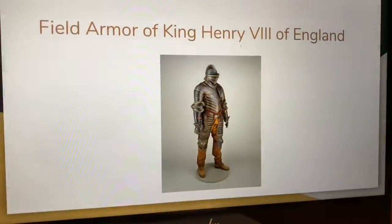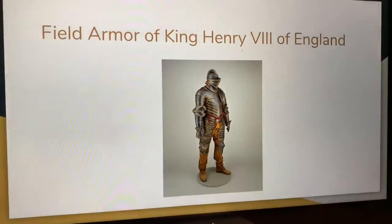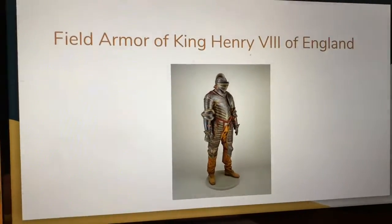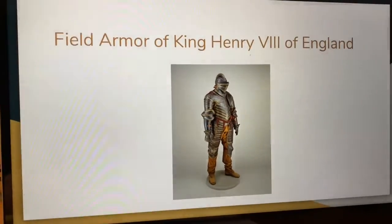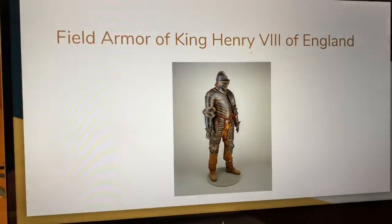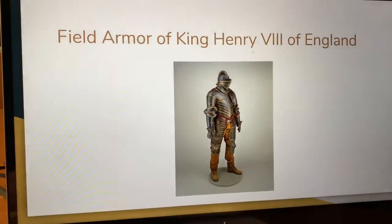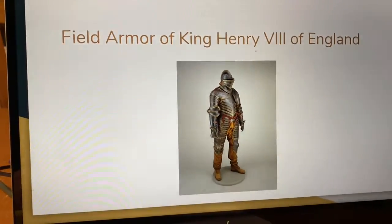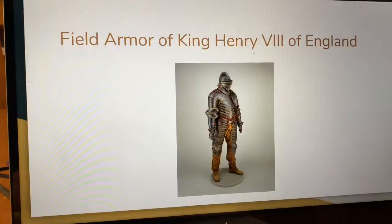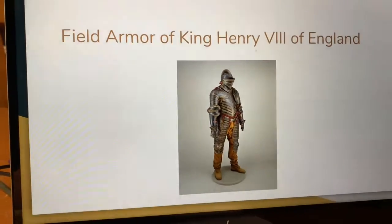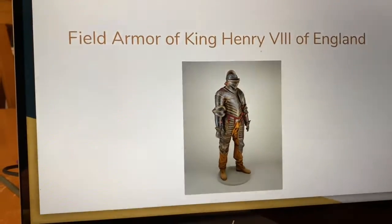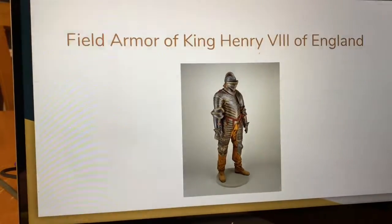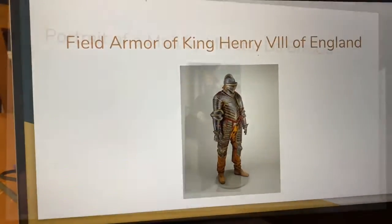The eighth artwork is the field armor of King Henry VIII of England. It is armor made out of steel, gold, textile, and leather with dimensions of 72 and a half inches by 33 inches. It is rumored to have been made by a Milanese merchant known as Francis Albert.